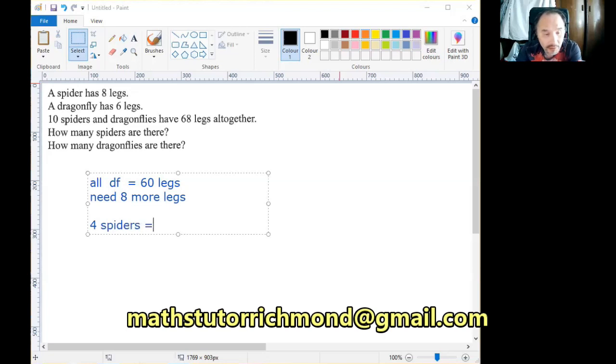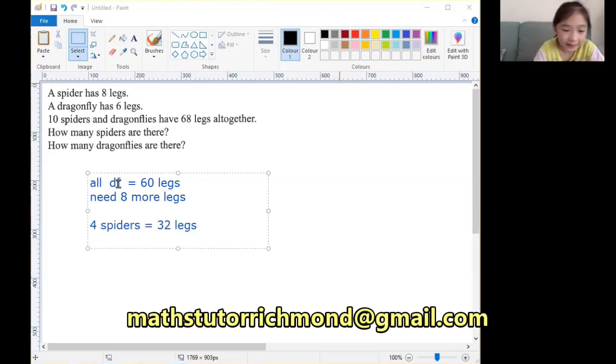Then how many legs? Four spider legs equals 32 legs. Yes, and that means there will be six dragonflies.